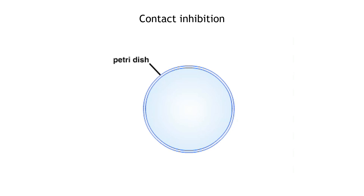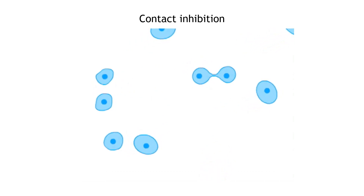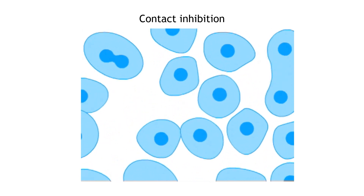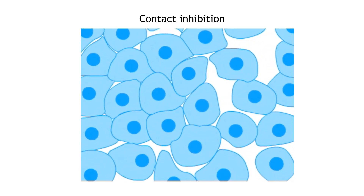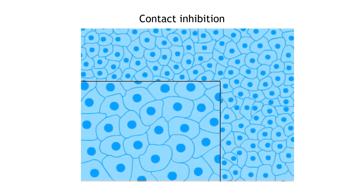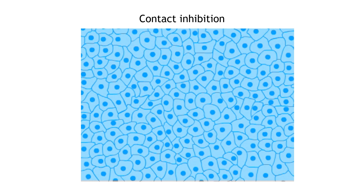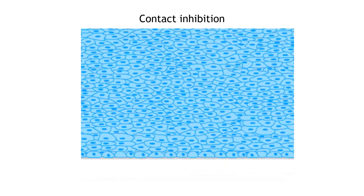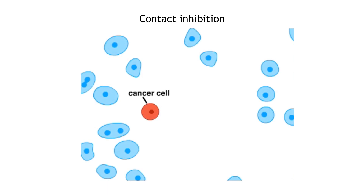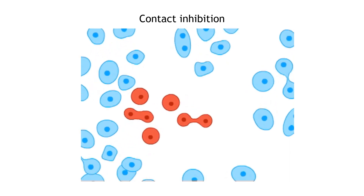When normal cells are introduced into a petri dish at low numbers, they begin to divide and proliferate. As cells begin to touch one another they slow their rate of division — this behavior is a consequence of contact inhibition. Once the cells fill the bottom of the dish, the rate of cell division slows further and is balanced by the rate of cell death, so total cell number remains constant. This state is called confluence, and contact inhibition ensures cells create a monolayer one cell thick.